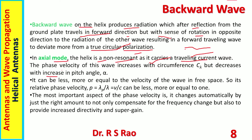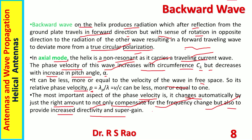In axial mode the helix is non-resonant as it carries a travelling current wave. The phase velocity of this wave increases with the circumference C/λ but decreases with increase in pitch angle alpha. It can be less than, more than, or equal to the velocity of the wave in free space. The relative phase velocity p = λp/λ = v/c can be less than, more than, or equal to 1. Most importantly, the phase velocity changes automatically by just the right amount not only to compensate for frequency change but also to provide increased directivity and super gain.